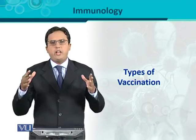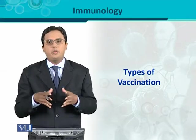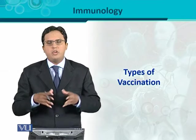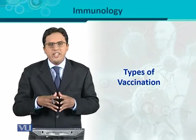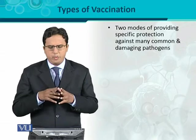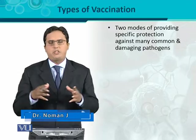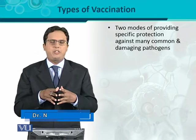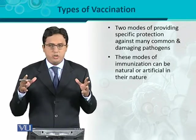Types of vaccination. Vaccination or immunization is a process by which there is specific protection provided against common pathogens. So how can protection against common pathogens be given using compounds, molecules, or certain substances called vaccines? There are different varieties — two modes of providing specific protection against many common and damaging pathogens, and these modes of immunization can be natural or artificial in their nature.